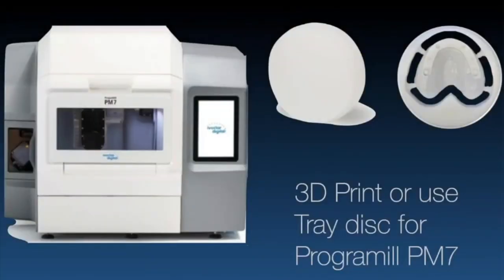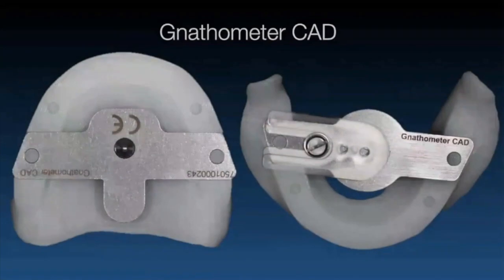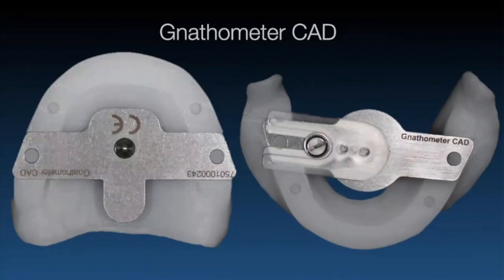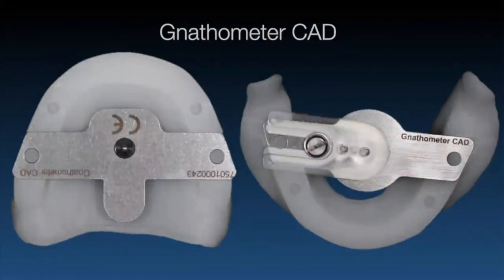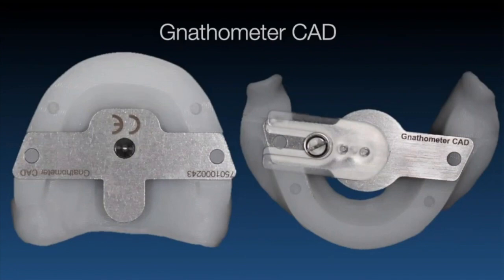We need these upper and lower custom trays to do our closed-mouth impression techniques and gothic arch tracing. You can mill or print them — printing is what most people are doing now. It's a hard custom tray. The original analog system had a metal framework for the tracers; with the digital denture, the carrier for the plates is milled or printed directly into the tray — one less piece to position, and they're all disposable.